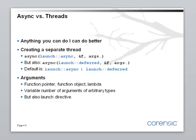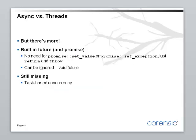On top of this, you can pass a launch directive, which you cannot with threads. Async also has a built-in future and a built-in promise, which is invisible to the user. Unlike with threads, you don't have to explicitly pass the promise, set a value, or set an exception — you just, like in a regular function, call return or throw. If you don't want to use the future returned by async, you can just ignore it.